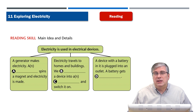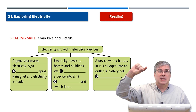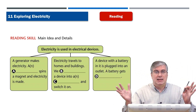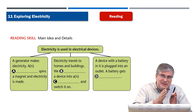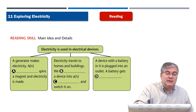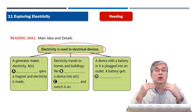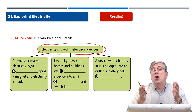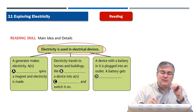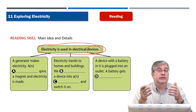Let's talk about how the information in this reading passage is organized. We have main idea and supporting details. The main idea is a general, broad idea, and the details are specific examples that support it. So what is the main idea? The main idea is: electricity is used in electrical devices — a machine or tool you use for enjoyment or to help you do some work.